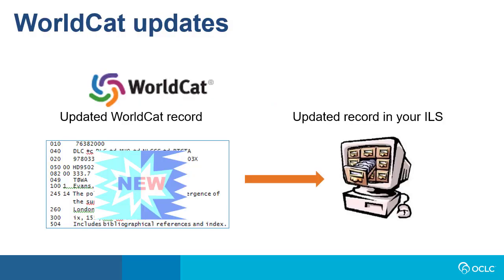WorldCat updates gives libraries the option to receive updated records when WorldCat records containing the library's holdings have changed for titles in their knowledge base and ongoing query collections in Collection Manager, as well as changes for titles in the library's WorldCat holdings. WorldCat holdings refer to all of the library's holdings in WorldCat that the library sets via Collection Manager and other OCLC services like Connection or Cat Express.